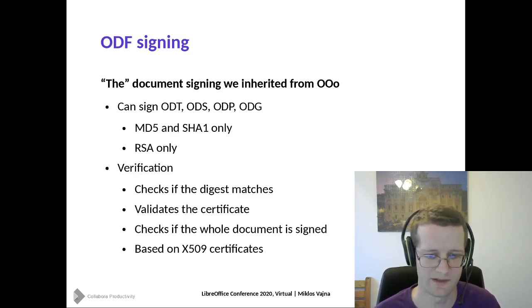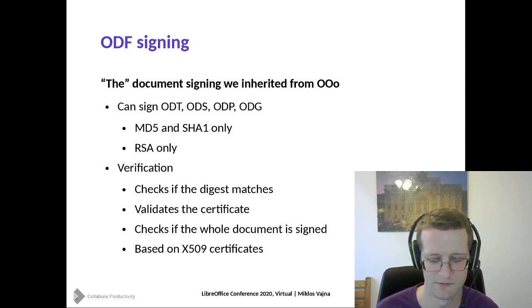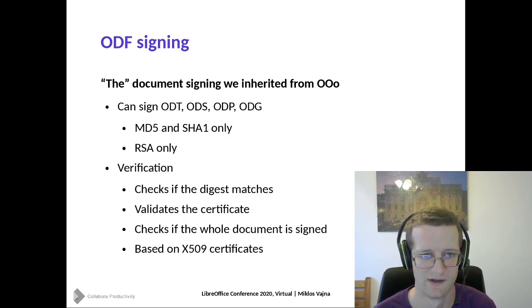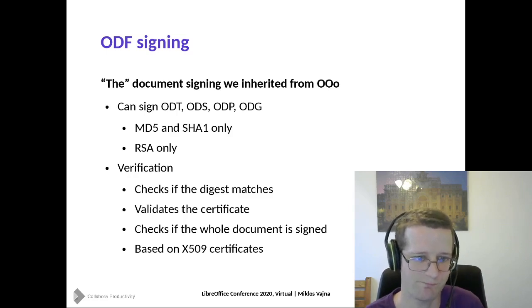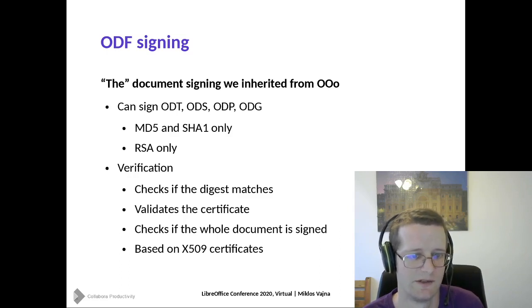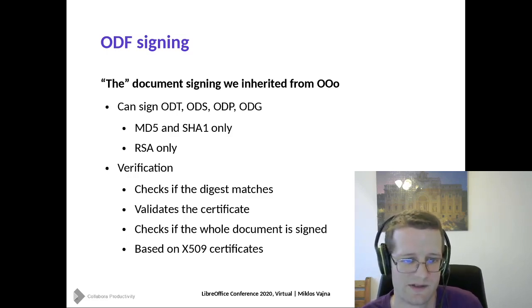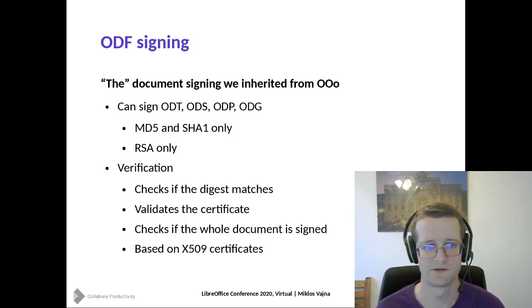When it comes to signing, you always have to decide what hashing algorithm to use to create a digest from your original content, and then you sign that digest. For digesting, only the older MD5 and SHA-1 were supported, not the newer SHA-256 or anything better. Also, only RSA was supported, so newer ECDSA or anything else was not supported.